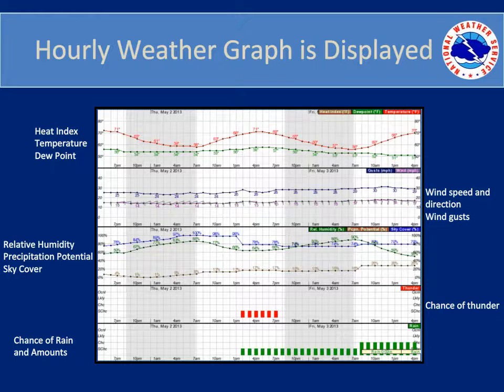You can also advance the graph in time using the forward two days button above the graph. In addition, as you move your mouse over the hourly weather graph, the forecast information for that particular time period will be displayed below the graph. The variables displayed in each section of the graph are listed here, and we'll go into more detail about each variable on the next few slides.